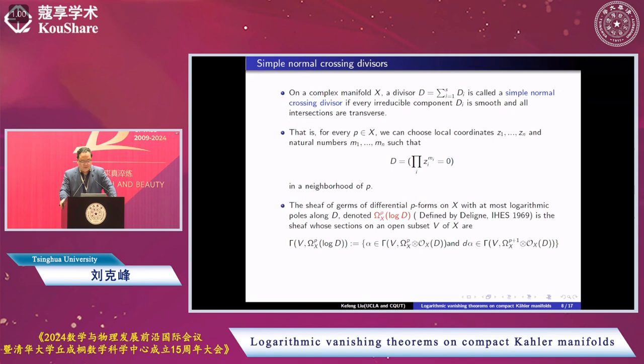So that means for any point P, we choose a local coordinate and the corresponding divisor should be given by, actually, this m_i in this case should be equal to 1, so it's a simple normal crossing. There's no multiplicity in a neighborhood.